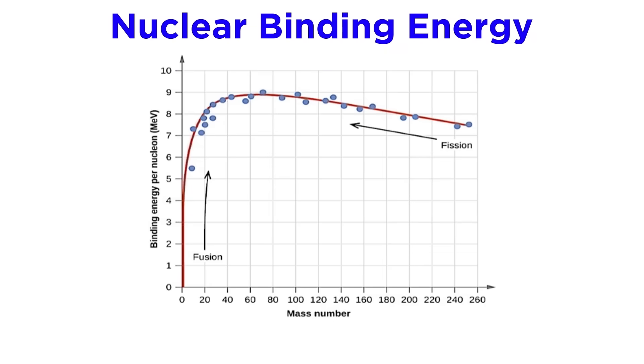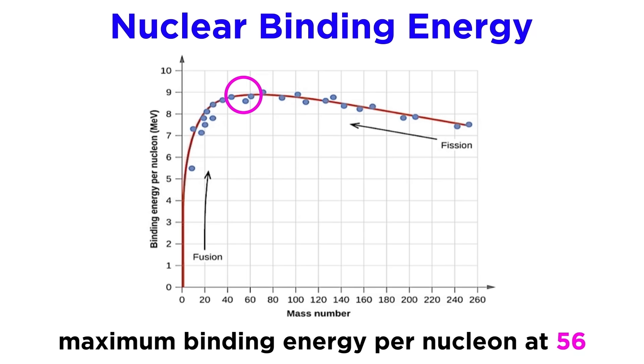So which nuclei are the most stable? Let's look at a chart that plots the binding energy per nucleon against the mass number. That means the average force holding together every particle inside a particular nucleus. We can see that the maximum binding energy occurs around 56 atomic mass units. This means that iron-56 is the most stable nucleus in the universe, as it has the maximum binding energy per nucleon, meaning that the greatest amount of energy is liberated when precisely this arrangement of nucleons fuses together to form an atomic nucleus.